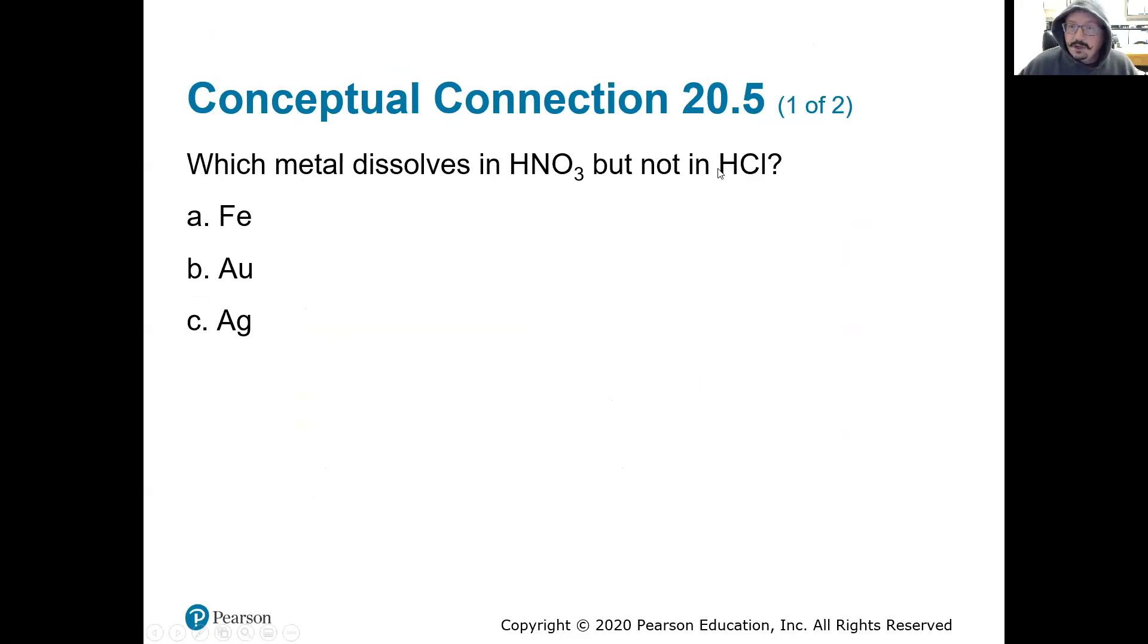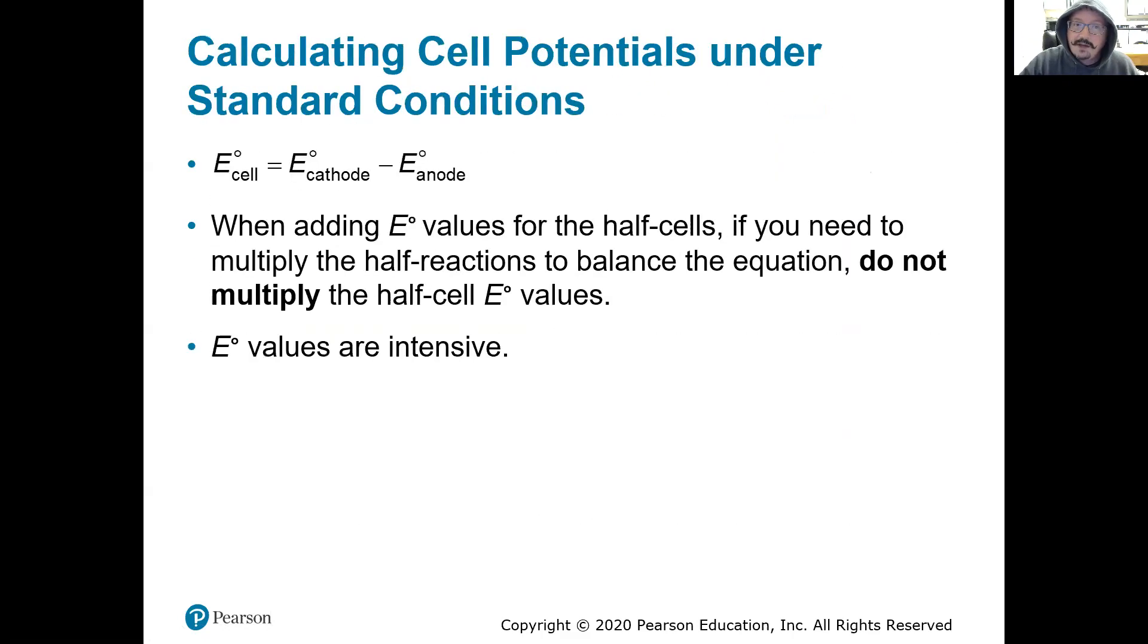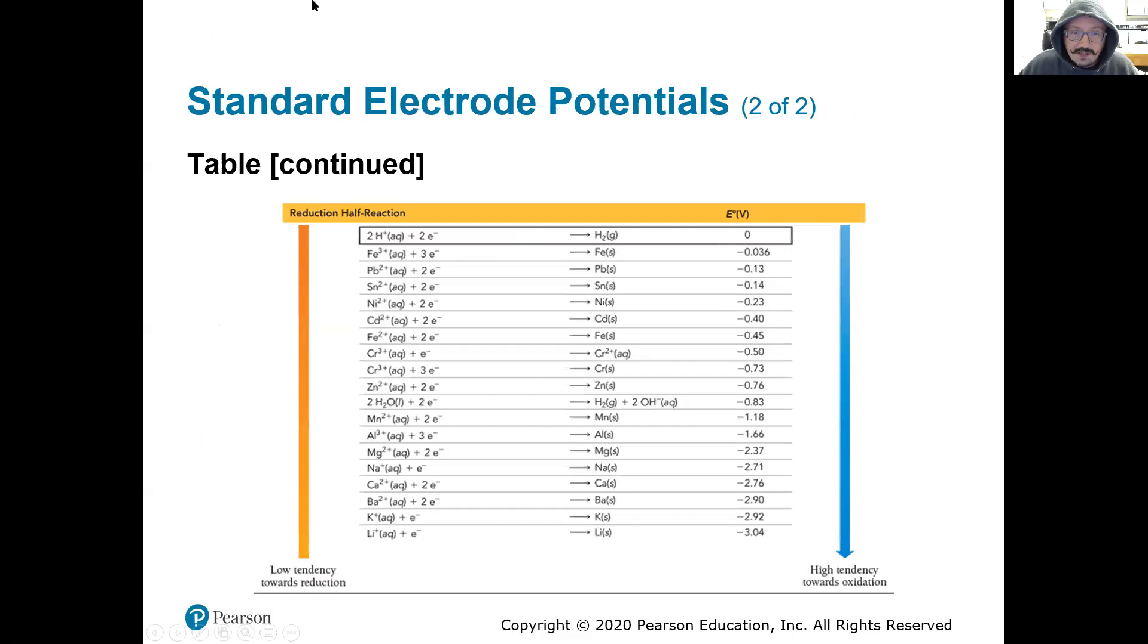And that's really all we're doing to predict whether or not it will dissolve. What's higher or lower than what on the table, what's going to be reduced, what's going to be oxidized. So which metal dissolves in nitric acid but not hydrochloric acid? Well, hydrochloric acid is just going to be H plus ions in the solution.